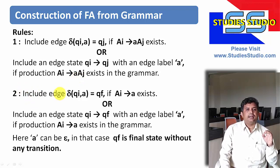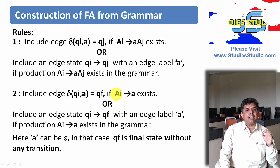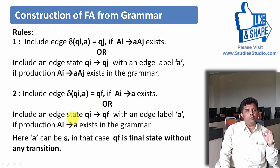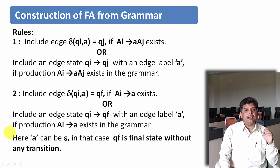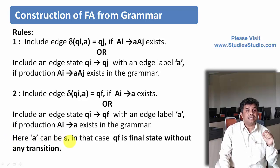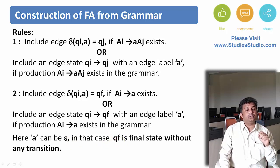The second rule is: include an edge delta QI to QF — where QF is the final state — if in the grammar we are having AI derives A. In other words, we need to include an edge from QI to QF with edge label A, if we are having a production of the type AI derives A in the grammar. Here A can be Epsilon also. Whenever A is Epsilon, QF is the final state without any transition — that we need to take care of.